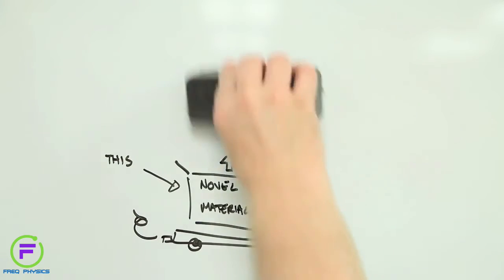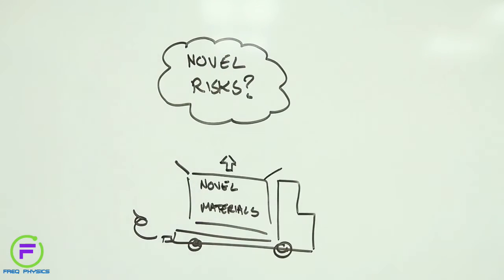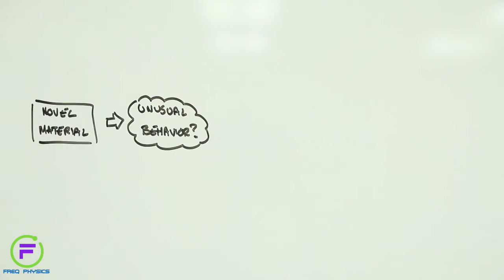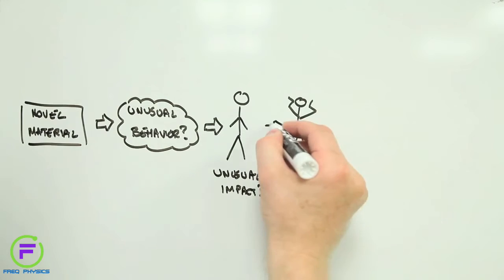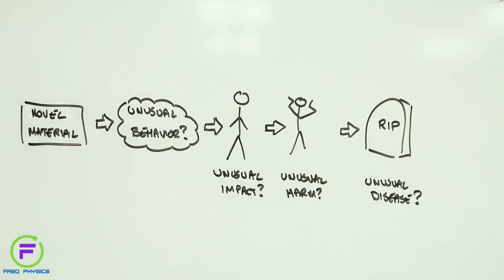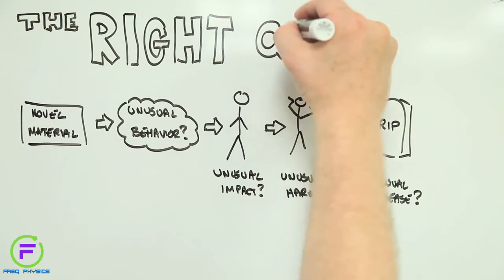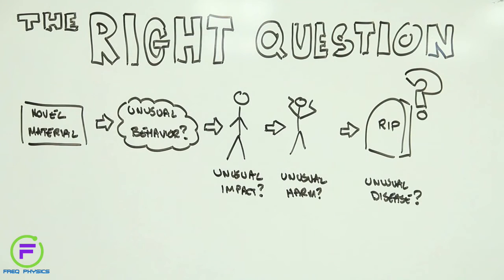How do we know that these novel materials don't come prepackaged with novel risks? On the surface, the question makes a lot of sense. If a material is designed to behave in unusual ways, who's to say that that unusual behavior won't lead to unusual biological impacts that in turn lead to unusual harm and unusual diseases? However, this is also a somewhat misleading question. And here's why.